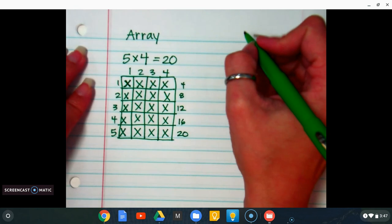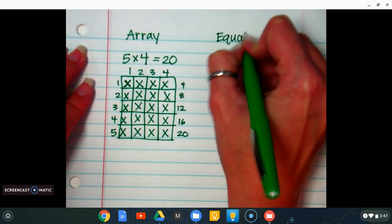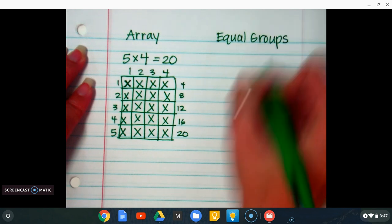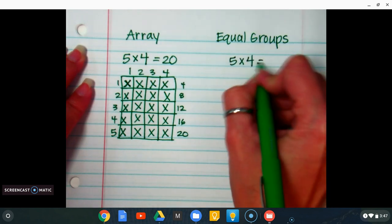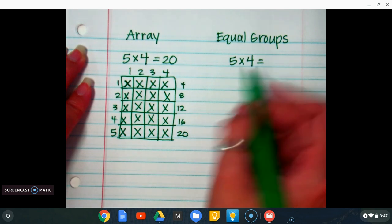Okay, so if I was going to solve this using equal groups, this is how I would start. We're going to do the same multiplication equation, 5×4. The first number tells you how many circles you're going to have, so I'm going to do 5 circles: 1, 2, 3, 4, 5.